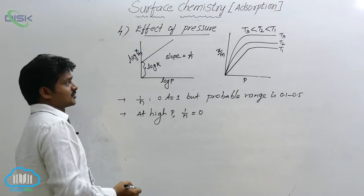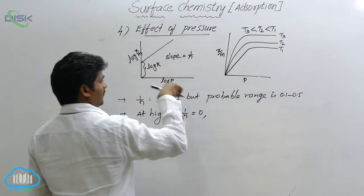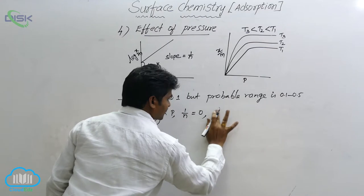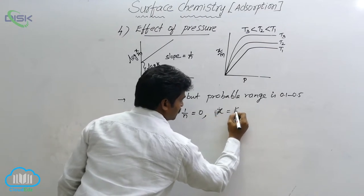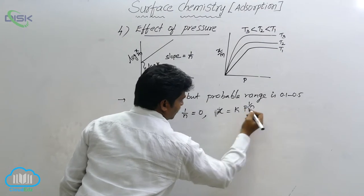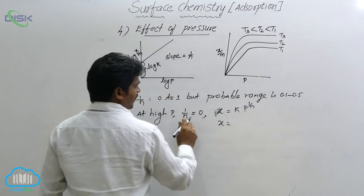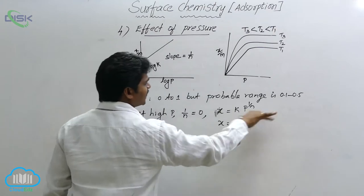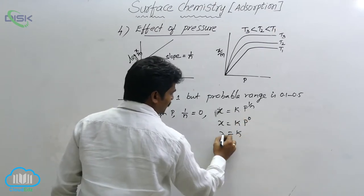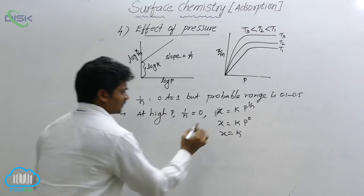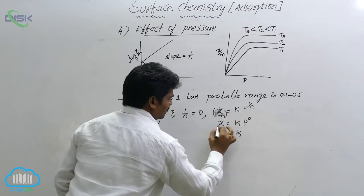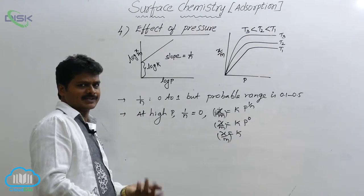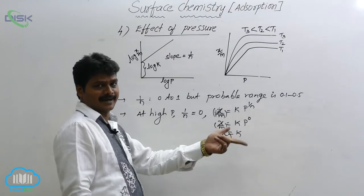When 1/n equals 0, substituting into the Freundlich equation gives x/m = k × p^0. Since anything raised to the power 0 equals 1, this becomes x/m = k, which is a constant. This indicates that the extent of adsorption does not depend on pressure at high pressures.